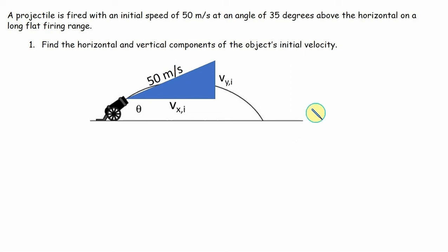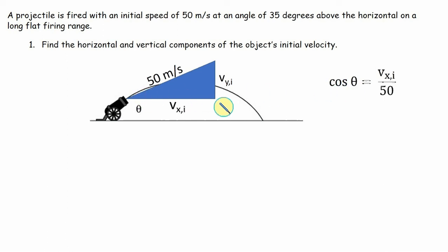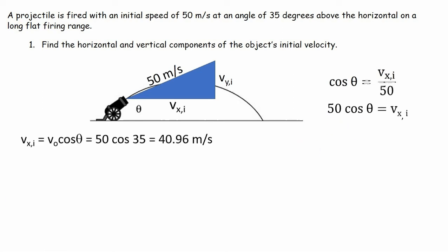How do we solve for these? As a review, we can talk about SOHCAHTOA — the cosine and sine concepts. To solve for the adjacent side, which is the velocity in the x direction initially, VXI is the adjacent side to our angle. The cosine of that angle is defined as the adjacent side VXI divided by the hypotenuse 50. Solving for VXI: multiply both sides by 50, giving us the hypotenuse times cosine theta equals VXI. So VXI equals V0 times cosine theta, which is 50 times cosine 35.